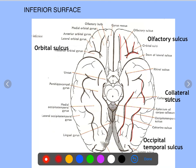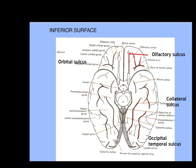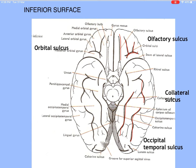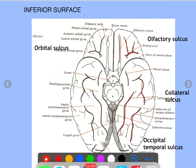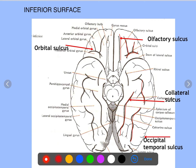On the inferior surface we have the collateral sulcus and the occipitotemporal sulcus, dividing the area into three parts. The medial-most is the parahippocampal gyrus, then the medial occipitotemporal gyrus, and the lateral occipitotemporal gyrus. There is also the olfactory sulcus, which lies beneath the olfactory stria, and the orbital sulcus.